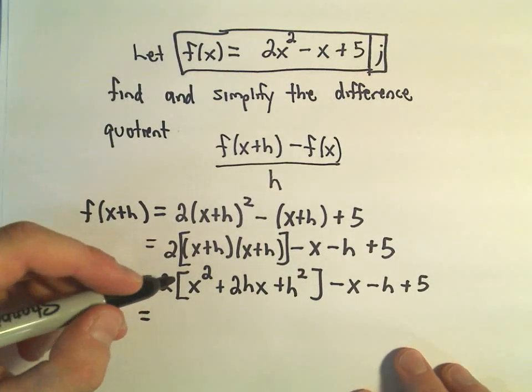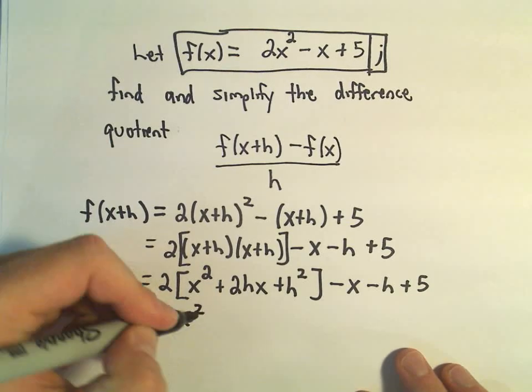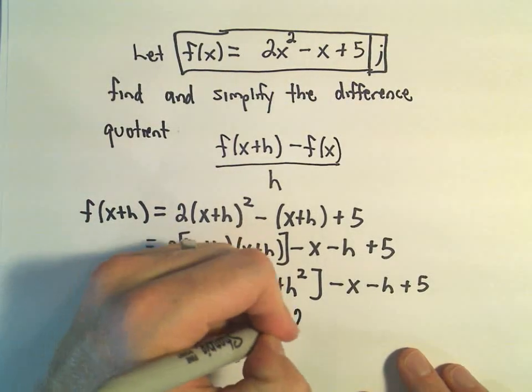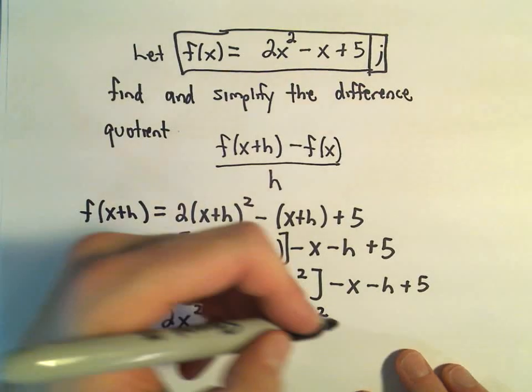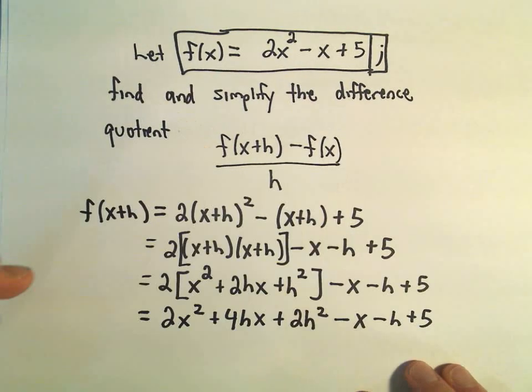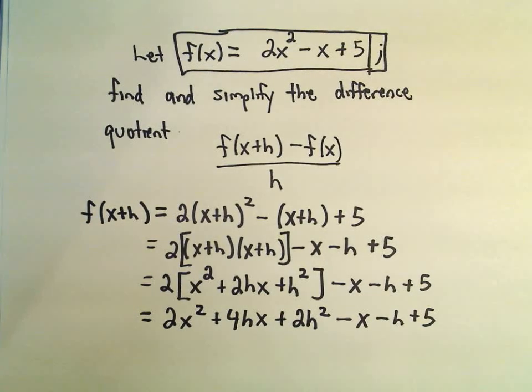So if we distribute to the brackets, we'll get 2x squared plus 4hx plus 2h squared minus x minus h plus 5. And now I'm kind of looking for some like terms to simplify and combine. I don't really see a lot to do, so I'm just going to kind of leave it like that for the moment.